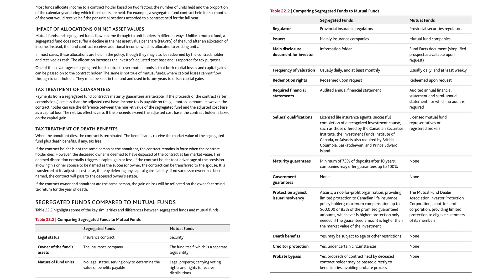Tax treatment of death benefits. When the annuitant dies, the contract is terminated. The beneficiaries receive the market value of the segregated fund, plus death benefits if any, tax-free. If the contract holder is not the same person as the annuitant, the contract remains in force when the contract holder dies. However, the deceased owner is deemed to have disposed of the contract at fair market value, which normally triggers a capital gain or loss. If the contract holder named his or her spouse as the successor owner, the contract can be transferred to the spouse at its adjusted cost base, deferring any capital gains liability. If no successor owner has been named, the contract will pass to the deceased owner's estate. If the contract owner and annuitant are the same person, the gain or loss will be reflected on the owner's terminal tax return for the year of death.